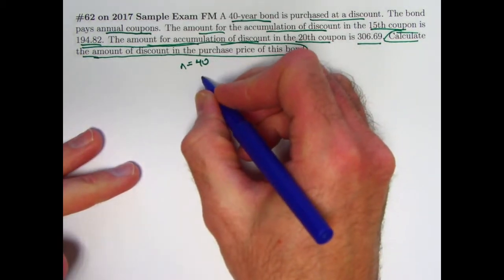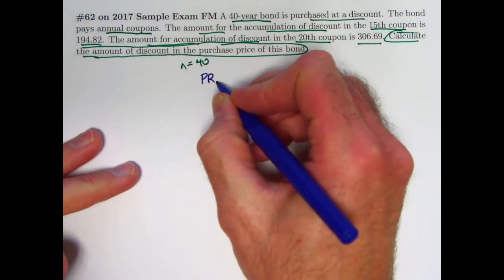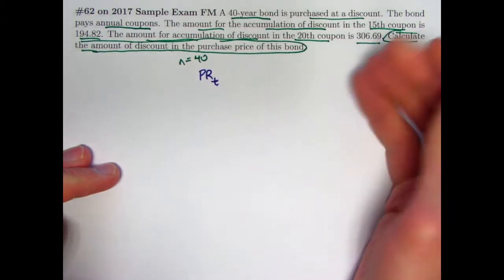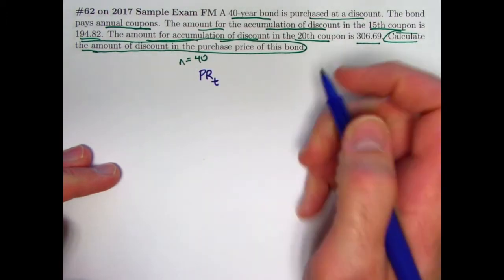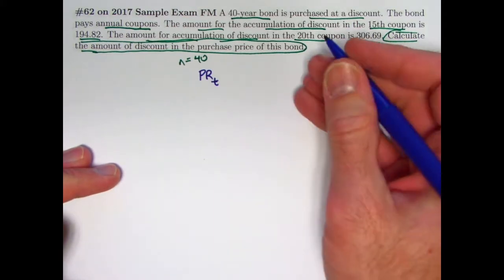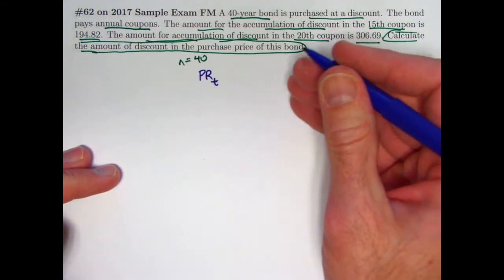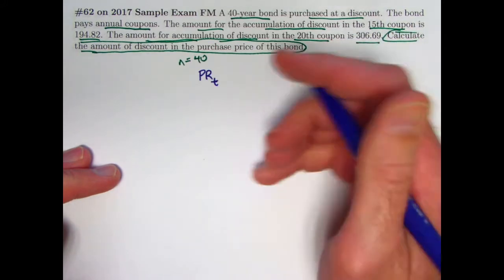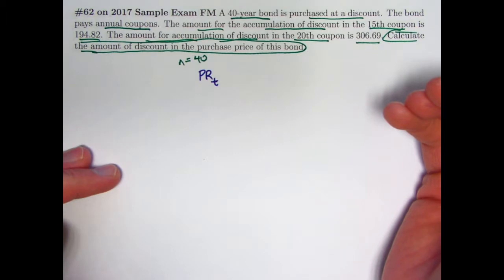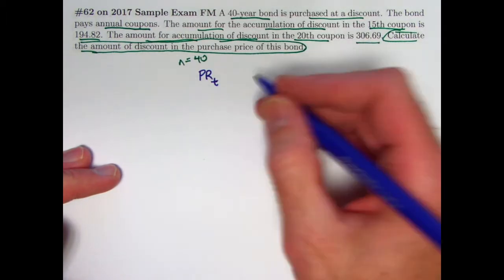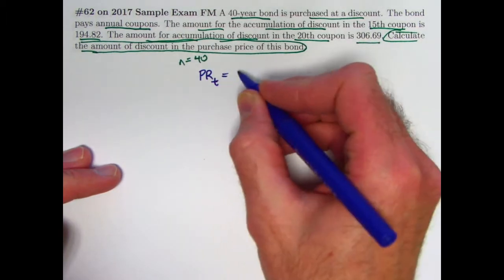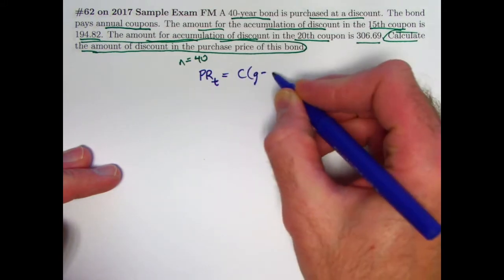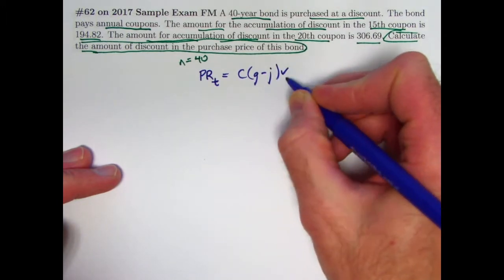One formula that will be helpful is a formula we've written down in recent videos. Here's a formula for PR_t, principal repaid at time t in the tth coupon payment. When the bond is bought at a premium, it really is a principal repaid. This is paying down the balance or book value of the bond. It's a positive quantity in that context. When the bond is bought at a discount, this is going to be a negative quantity. The formula for this in terms of the redemption value C, and the modified coupon rate little g, with yield rate j, looks like this.